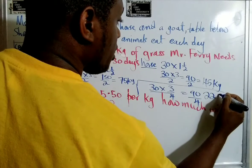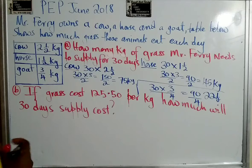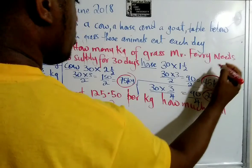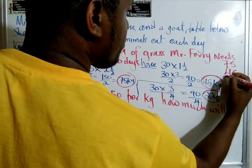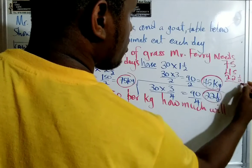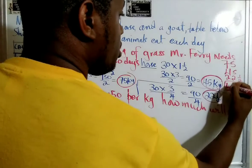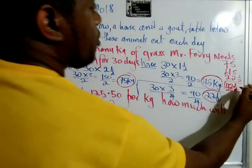So that gives us 22 and a half. So we know the goat, the cow, and the horse — we know what each is going to eat for the month. We can just total that and that will be our answer. So 75, 45, and 22 and a half. 22 and a half plus 75 plus 45 equals 142 and a half. So 142 and a half kilograms of grass is needed.